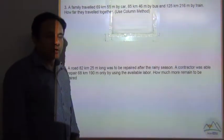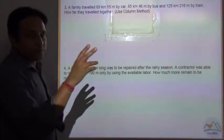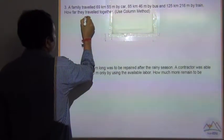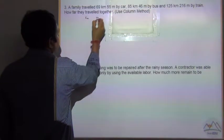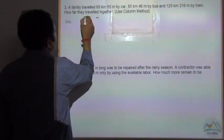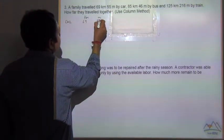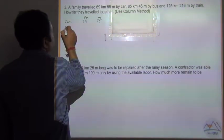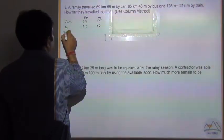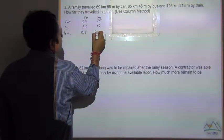So what does the column method say? Column method says all units should be written in the same column. So what two units are there? There is one kilometer and there is one meter. So kilometer and meter. By car, how will they travel? 69 km and 55 meter. By bus, 85 km and 46 meter. And by train, 125 km and 216 meter.